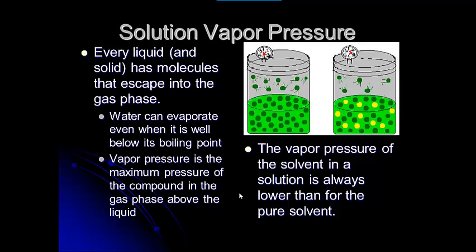What happens when we add a solute to a solvent is that the vapor pressure of the solvent in a solution is always lower than that of the pure solvent. Looking at the picture, the jar on the left has a pressure gauge — this is the pure solvent. On the right, the little yellow balls represent the solute in a solution. The vapor pressure for the solvent in the solution is always lower than that of the pure solvent, because it is harder for those particles to escape into the atmosphere.